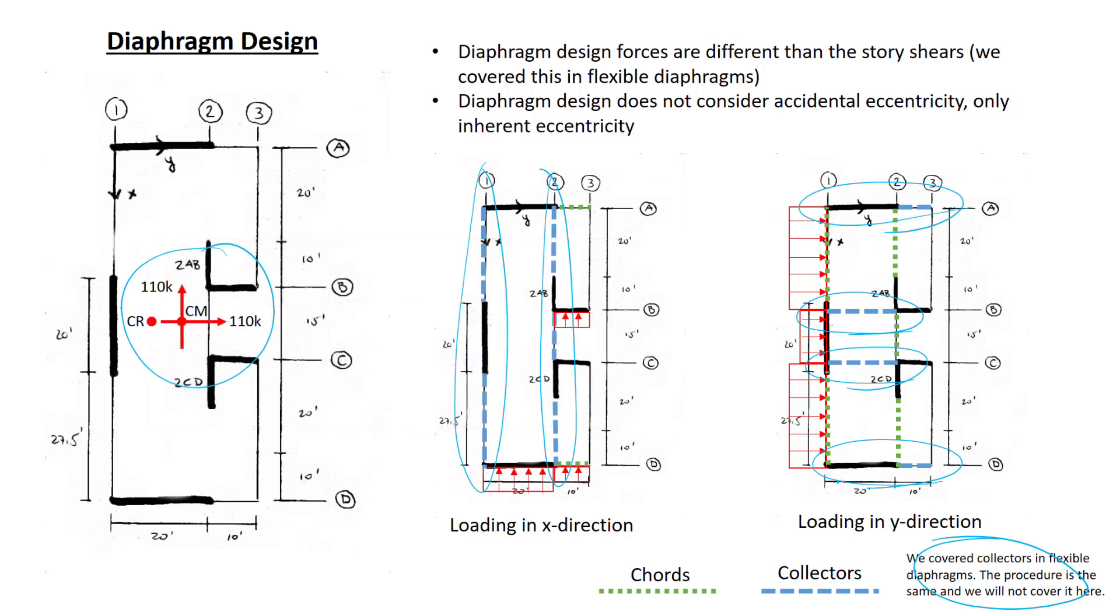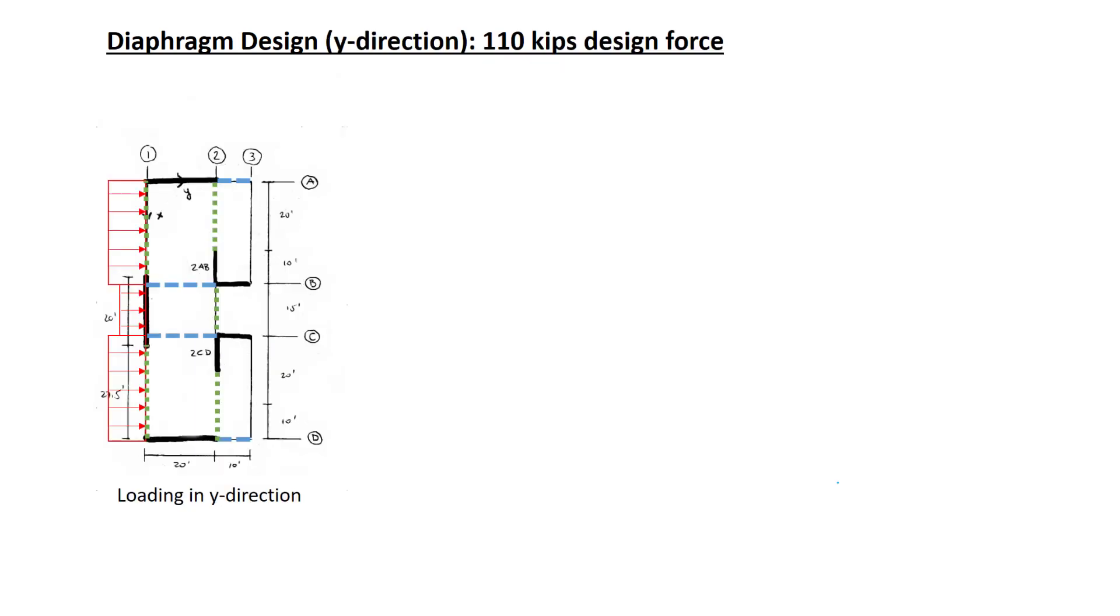Let's start now analyzing the simpler of these two cases, loading in the y direction. Loading in the y direction is simpler for two reasons. One is that there's no difference in the x-coordinate of the center of rigidity and the center of mass, that is, there's no inherent eccentricity. The other reason is that the cantilevered portions of the slab don't come into play as they will for loading in the x direction. So I'm showing here in the diagram, once again, a sketch for the diaphragm, cords, collectors, and the distributed load.